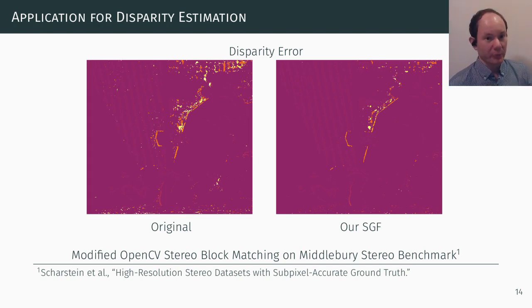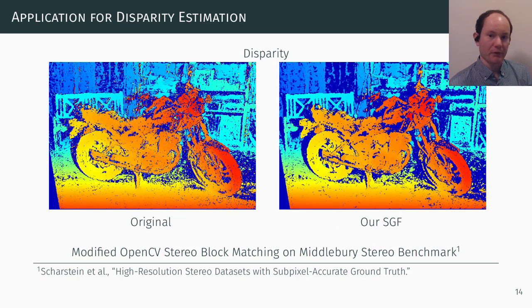We observe similar results on the Middlebury stereo benchmark with stronger improvements for both methods with our measure. Again, we can see fewer spurious incorrect measurements, for example around edges and in occluded areas.